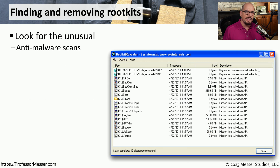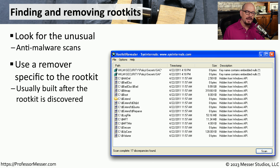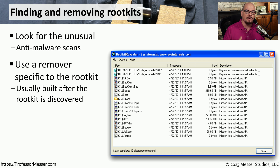Not all rootkits are part of the kernel; if a rootkit is running as a traditional process, you may still be able to identify it with anti-malware software. If you believe your system has been infected with a specific rootkit, there are standalone rootkit removal tools specific to different rootkit variants. These would be used after infection, so they may not prevent the rootkit from causing initial problems, but they may allow you to remove it and mitigate damage to your personal files.